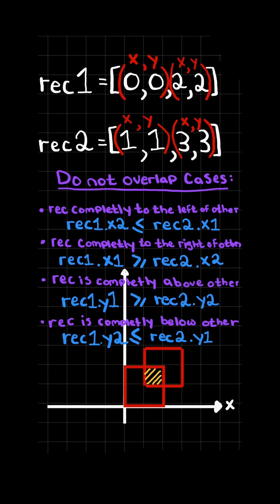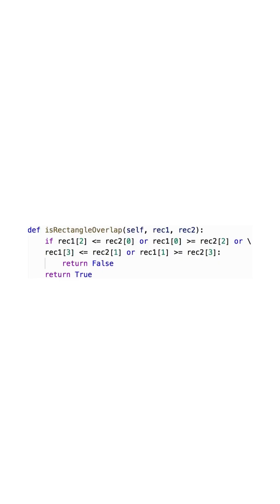With these four conditions, we are able to determine when the rectangles do not overlap, and so we return false in any of these cases. Here's the code to do so.